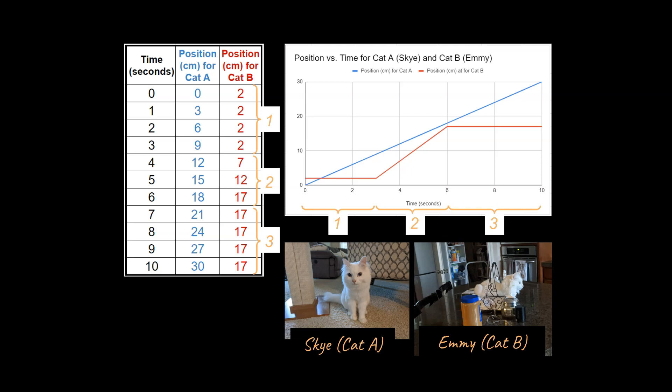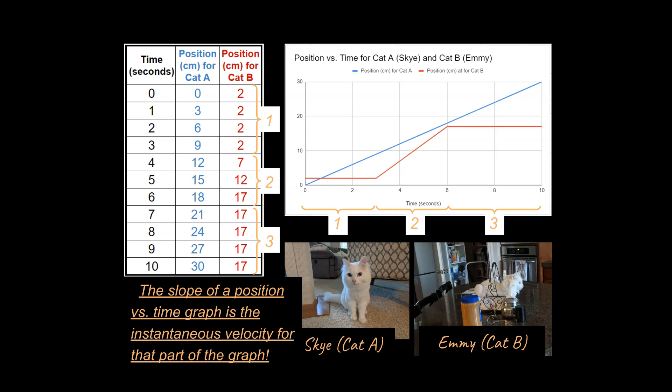In fact, they are exactly the same. The slope of a position versus time graph is the instantaneous velocity for that part of the graph. So what does that mean? Well, if we looked at the velocity right here, it would be zero. Right here, it would be zero. So any point along this line right here that has a zero slope would have a zero instantaneous velocity.